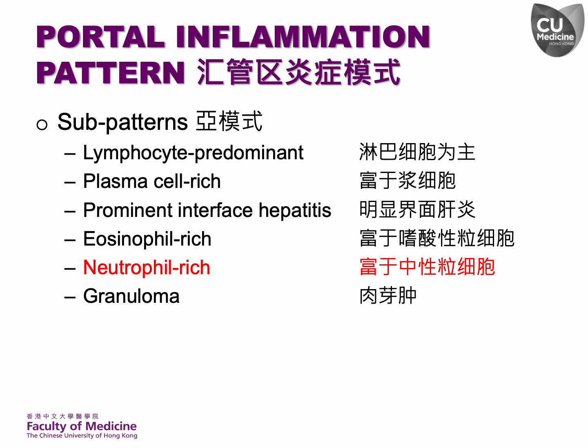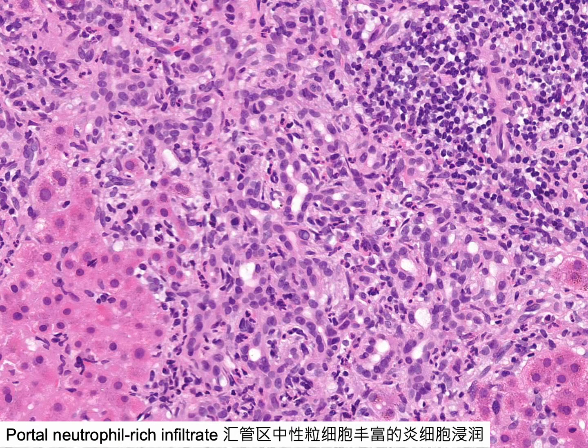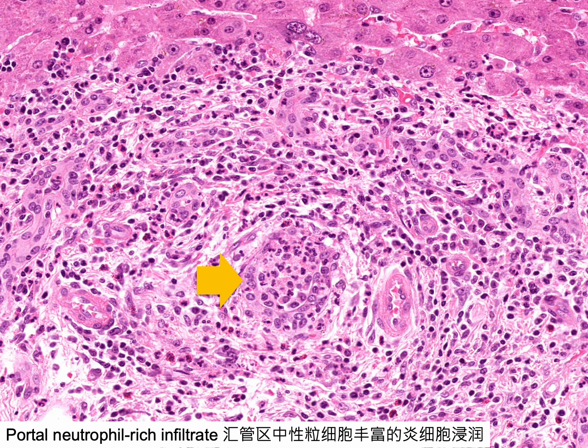Let's move on to discussing neutrophil-rich portal inflammation. A significant number of neutrophils are accompanied by ductular proliferation. This mixed portal inflammation consists of many neutrophils. An interlobular bile duct is infiltrated and distended by neutrophils, indicating acute cholangitis.